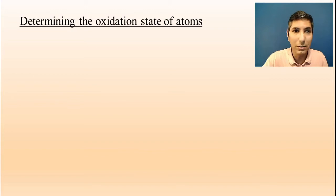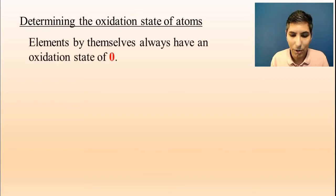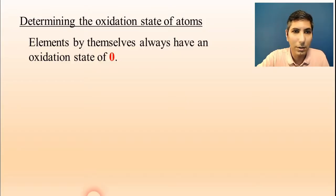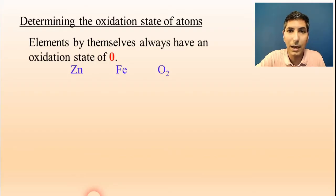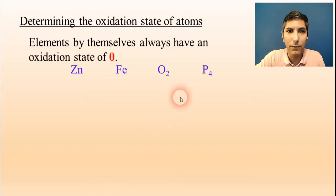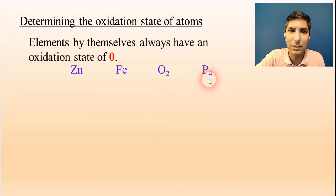The first rule you need to know is that elements by themselves always have an oxidation state of zero. You can look at pretty much any element — like zinc metal or iron metal — those are going to be zero. Even diatomic elements like oxygen are still going to be zero. Even polyatomic elements, like in the case of phosphorus or sometimes sulfur, it's still going to be zero. The charge of those atoms in any element by itself is zero.